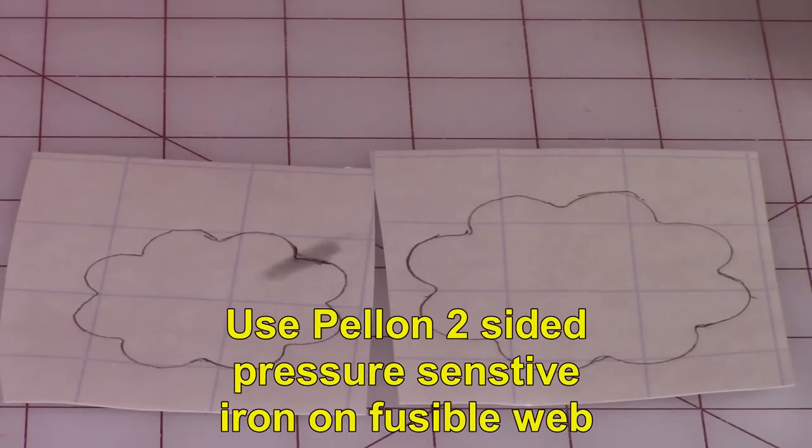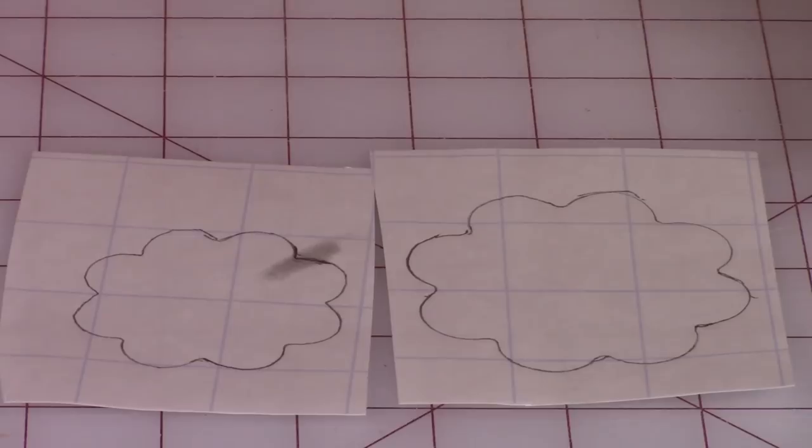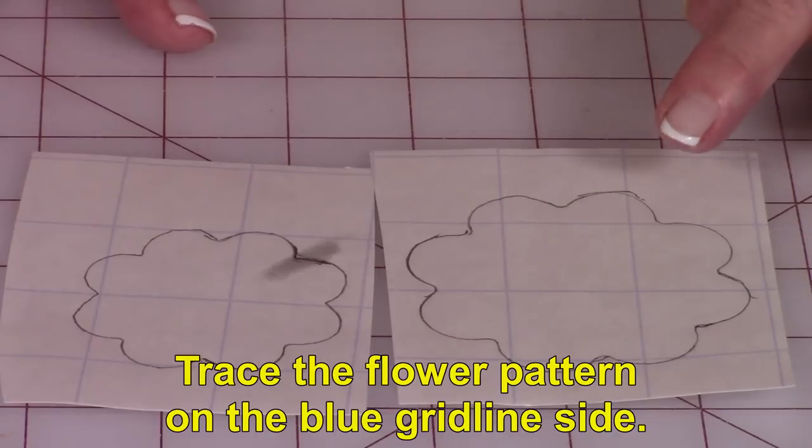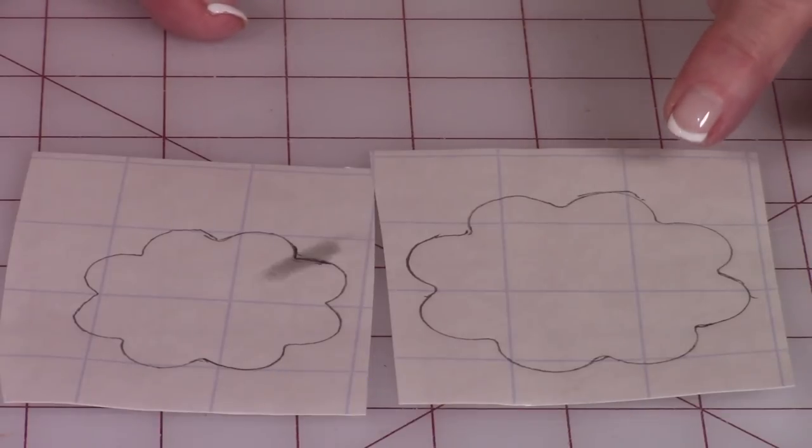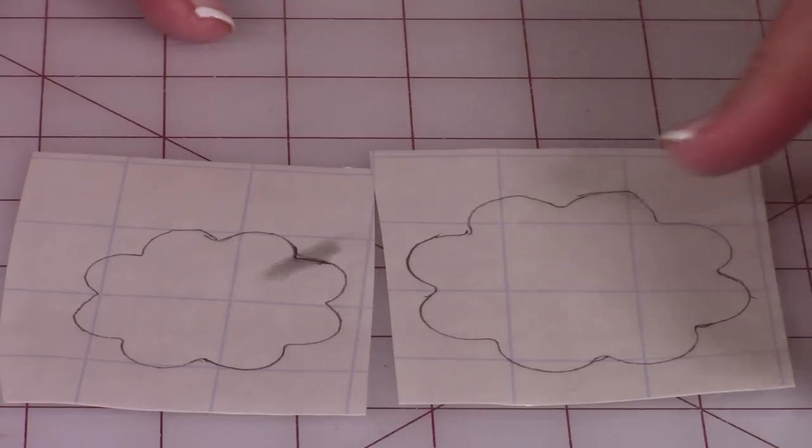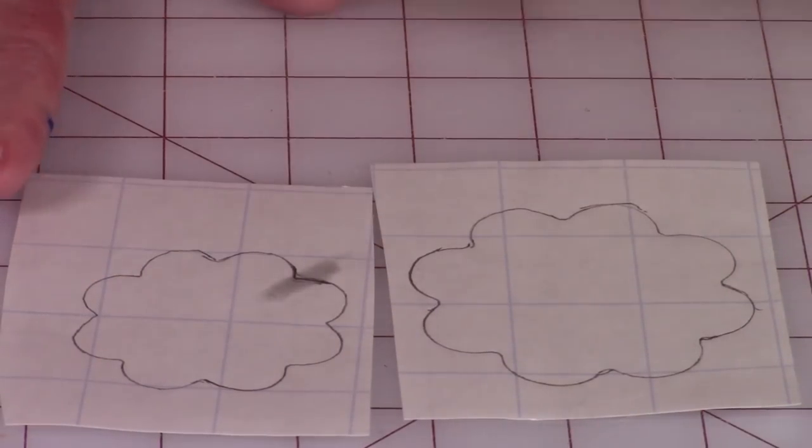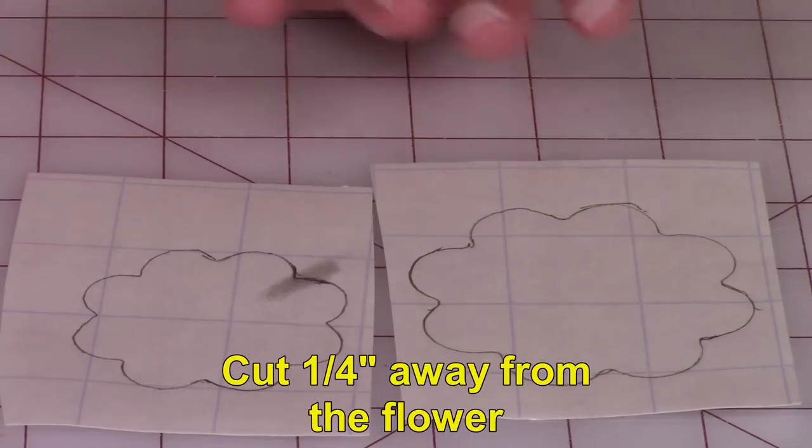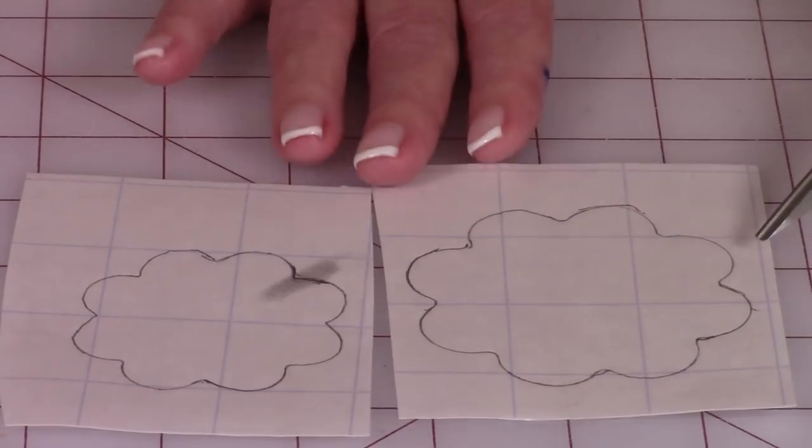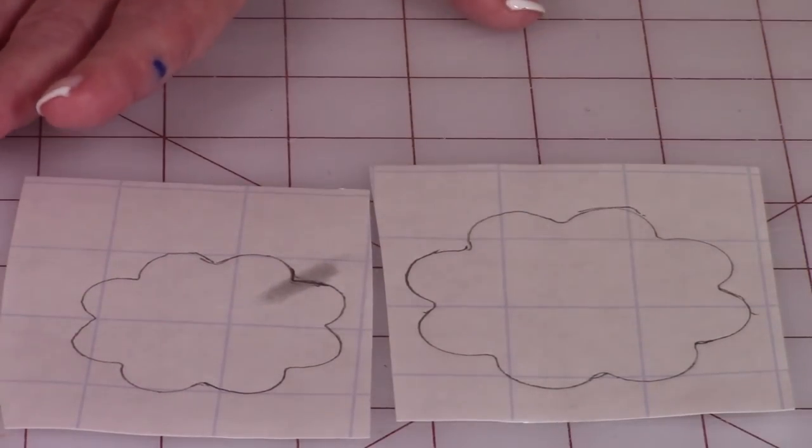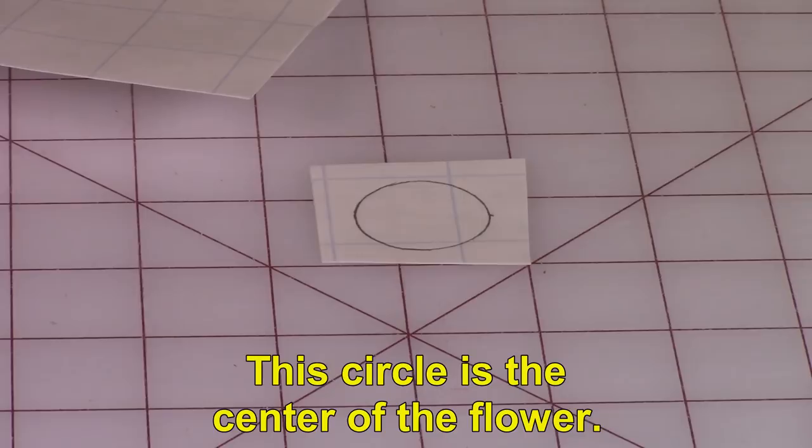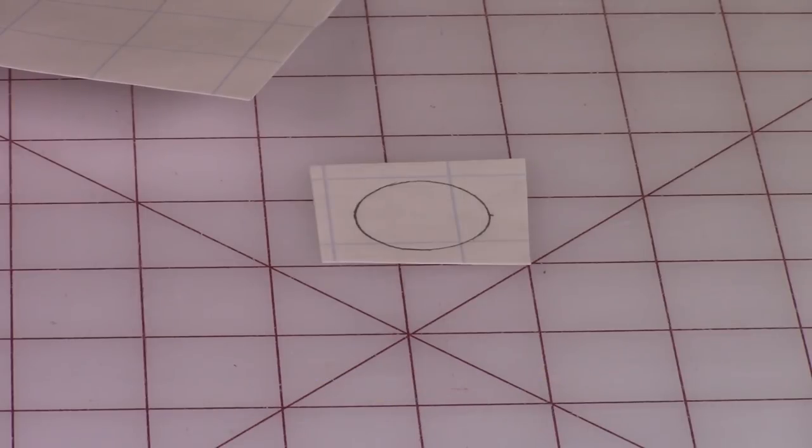This is the Pellon two-sided pressure sensitive fusible web. It comes in a package of about five sheets. You can buy this at Joann's, Amazon, and other hobby stores probably. So on one side are the blue grid lines. This is the side you want to trace your flowers on. The back side is just plain paper. So go ahead and trace onto that side. Then when you cut it out, you want to leave at least a quarter of an inch all the way around.